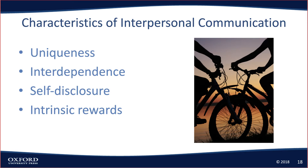The fourth one — sometimes people balk at this one — is the idea that there are intrinsic rewards: that you get something out of it. Not flowers and candy or a ride to work, but it's intrinsic, it's internal — when you are with this person, you feel good, you're happy. So you can make a table with three people's names and then the four features: uniqueness, interdependence, self-disclosure, and intrinsic rewards.